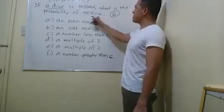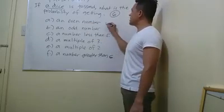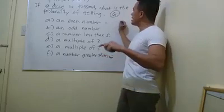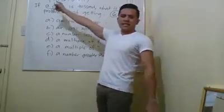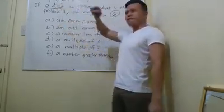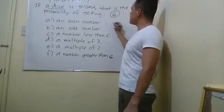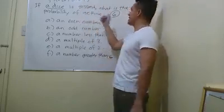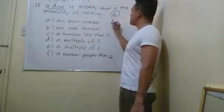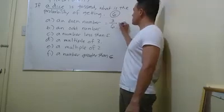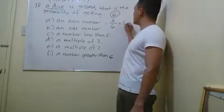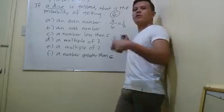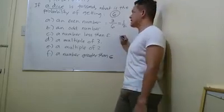What is the probability of getting an even number? How many even numbers do we have on the dice? We have two, four, six — so we have three. Three over the total events, which is six. Cancelled by three, we have one half. The probability is one half, or 50%.